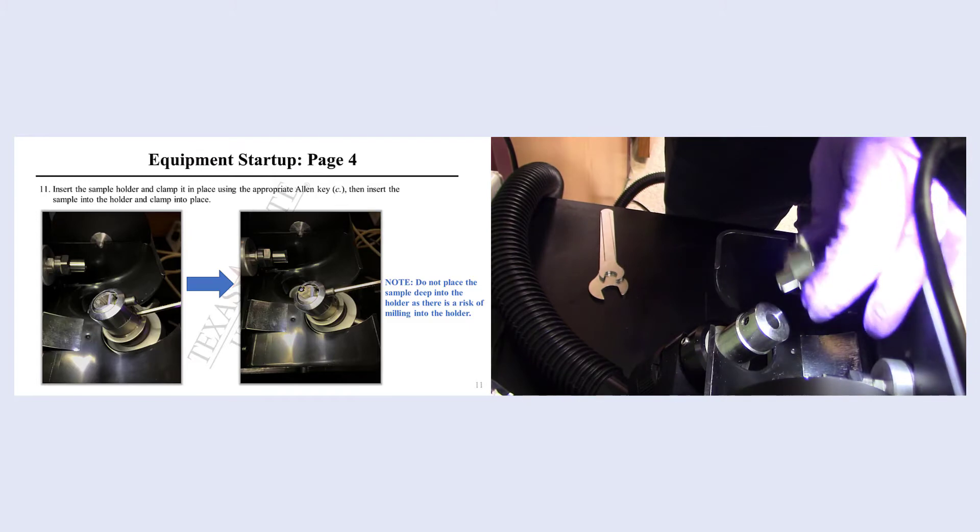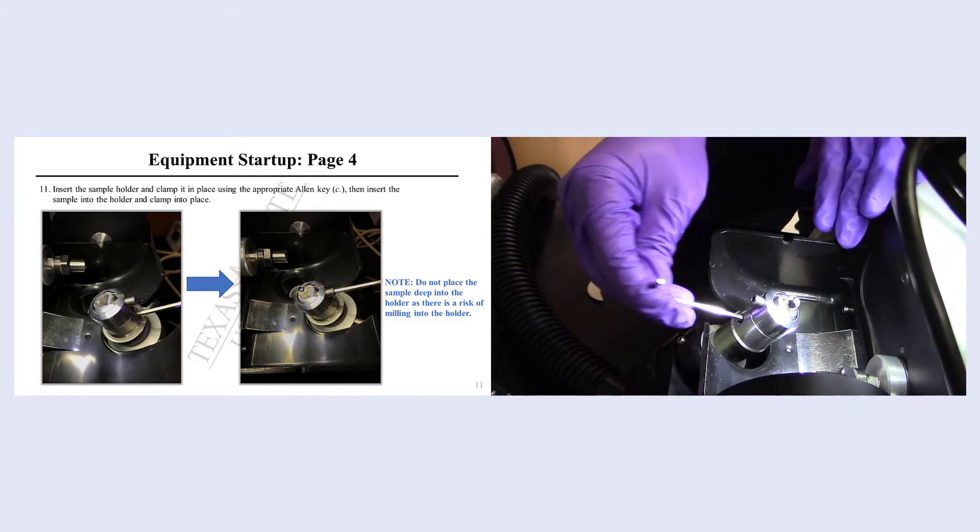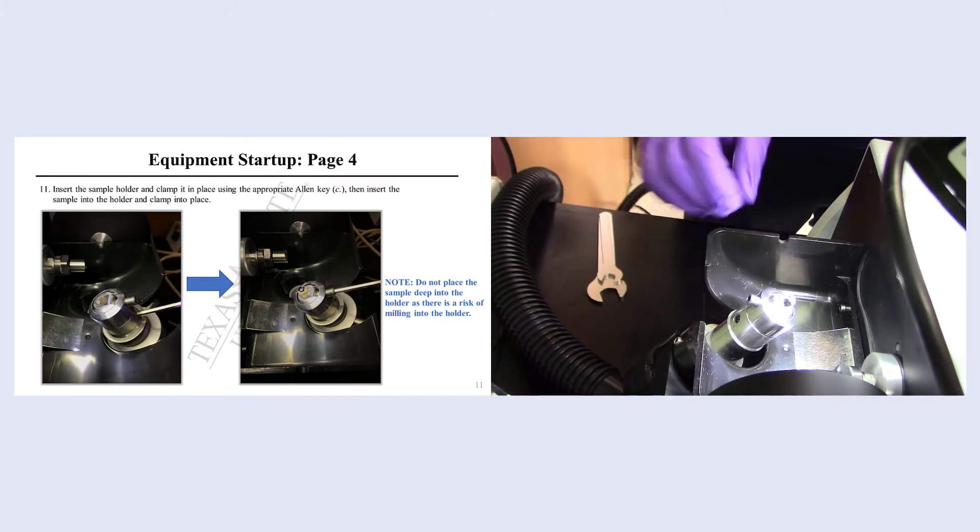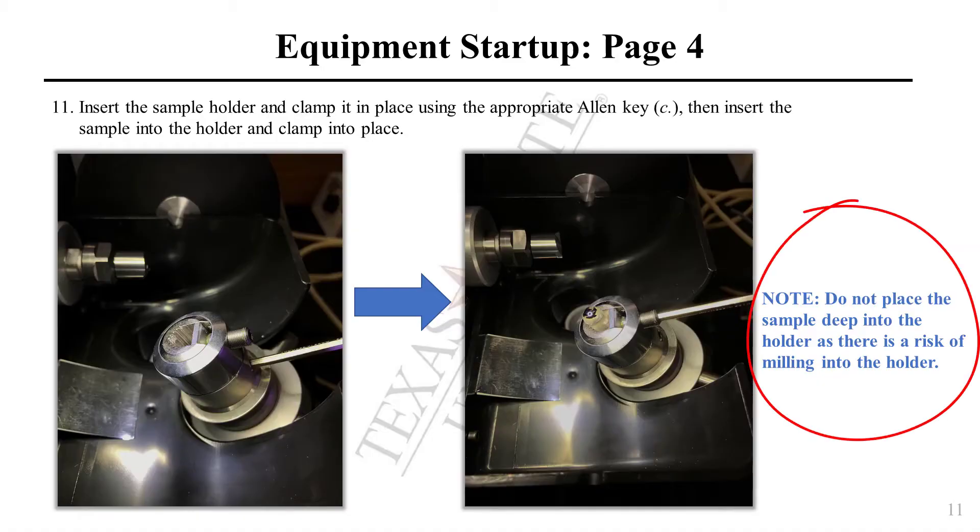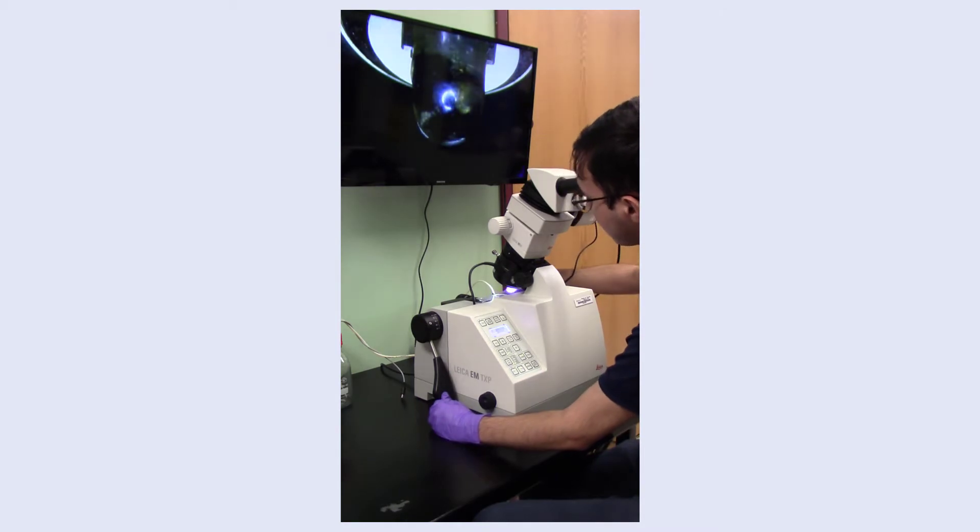Insert the sample into the holder and clamp it in place using the appropriate Allen key. Then insert the holder into the system. If milling at an angle, it is important to not place the sample deep into the holder, as there is a risk of milling into the holder. Rotate your sample to zero degrees, then replace the protective cover.